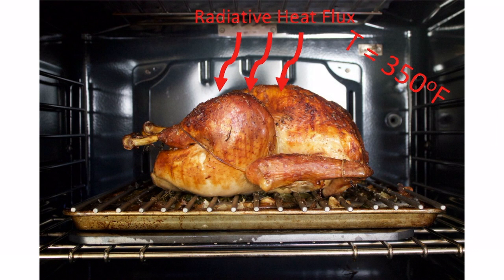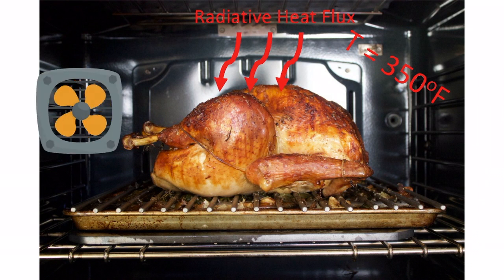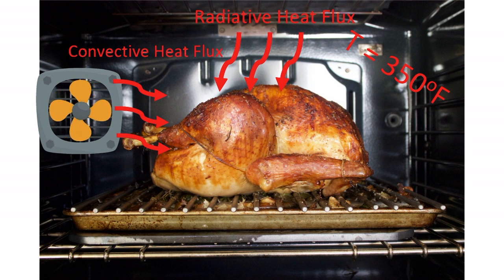How long it takes depends on how fast the heat transfer occurs. This is why a convection oven can cook faster than a simple radiant oven. The convection oven will provide more heat transfer at the same operating temperature than a radiation only oven. Therefore, the turkey will cook faster.